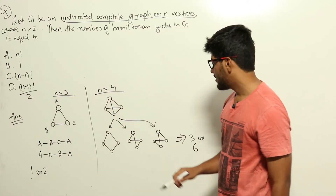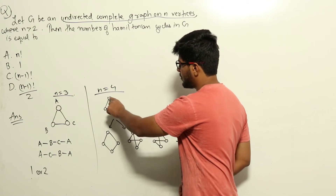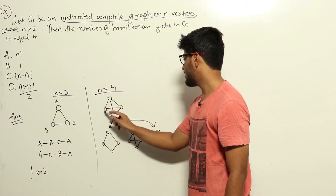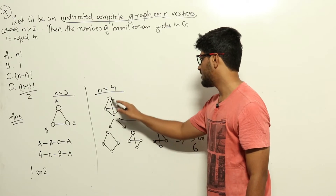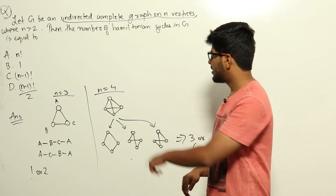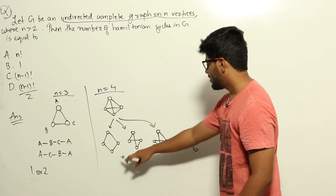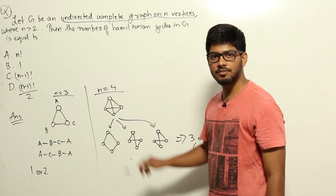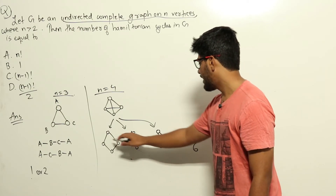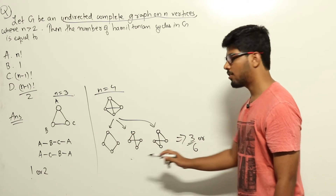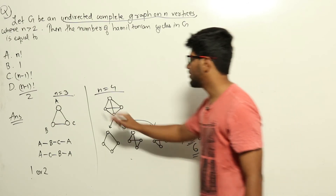For n equal to 4, the complete graph has three unique cycles. You can draw various possibilities and verify these three are the only ones. If we consider the reverse of each cycle as a different cycle (labeled graph), we get six cycles. So for n=4, the answer is either three or six; for n=3, it was either one or two.